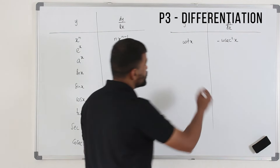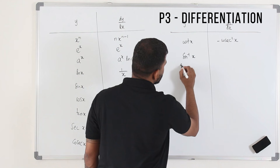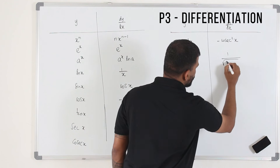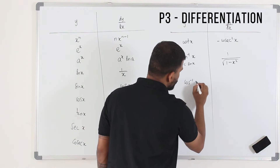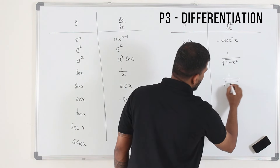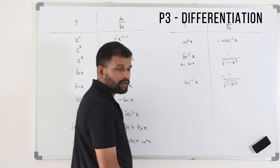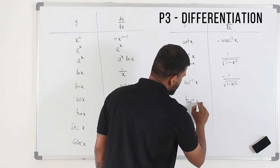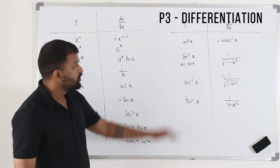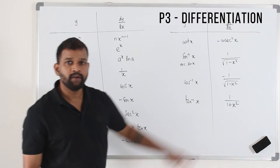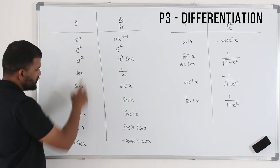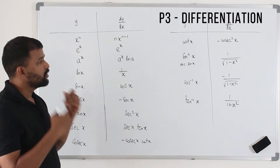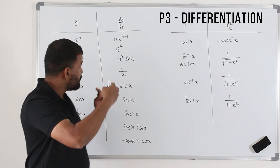Then there's the inverse trigonometric function. For sin inverse x — you can also write it as arcsin x — the derivative is 1 over the square root of 1 minus x squared. For cos inverse x, it's the same expression but with a negative sign in front. For tan inverse x, the derivative is 1 over 1 plus x squared. All these rules are in your data booklet, so you just need to memorize these 6 rules. This is how you differentiate basic functions.